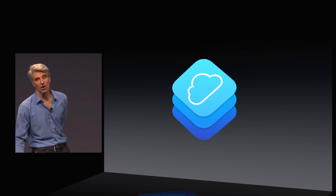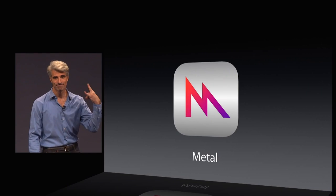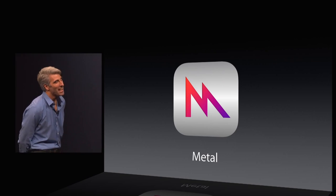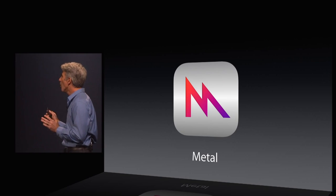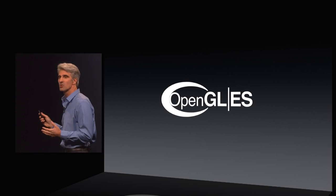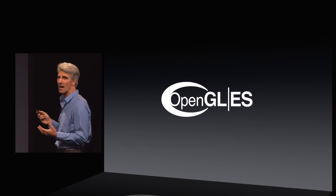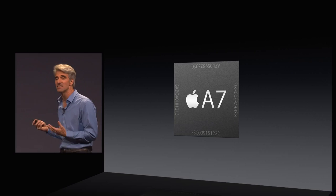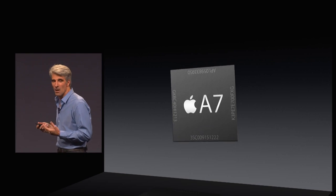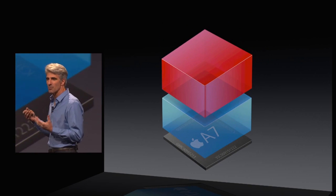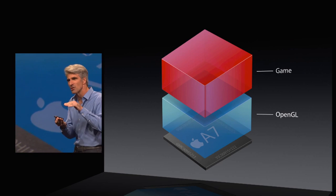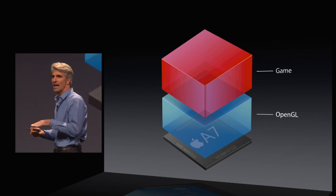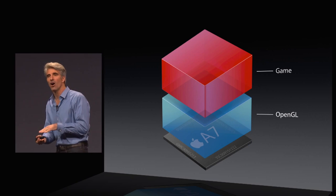3D graphics, and it's called Metal. As you know, OpenGL is the standards-based way for high-performance 3D graphics on iOS, giving you access to the power of the A7 processor. But increasingly, if you look at what goes on in the performance of the game, in addition to what the game wants to accomplish, OpenGL ends up being a thick layer of overhead between the game and the hardware.